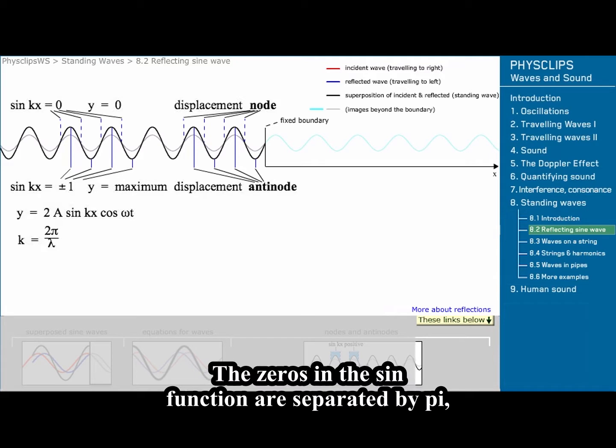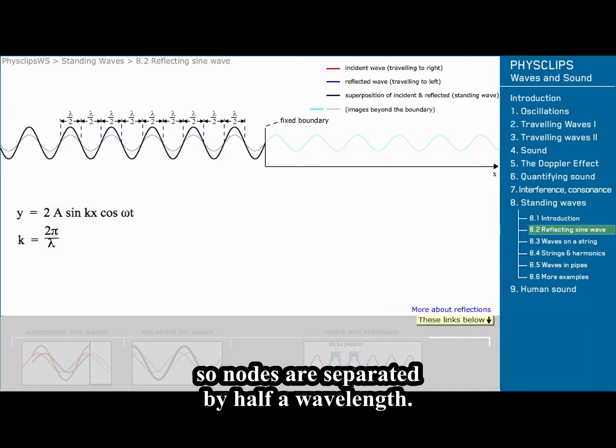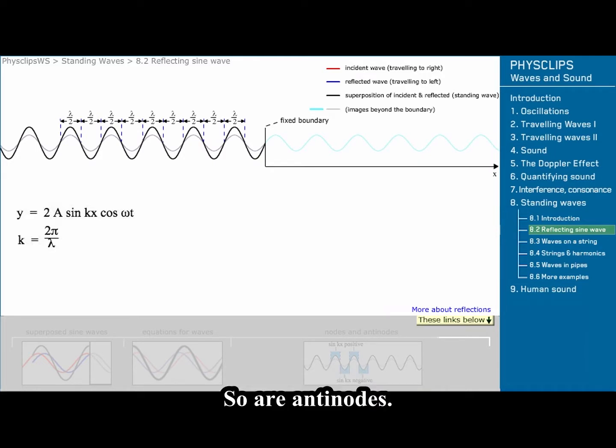The zeros in the sine function are separated by π, so nodes are separated by half a wavelength. So are anti-nodes.